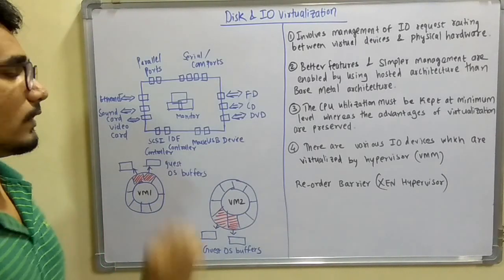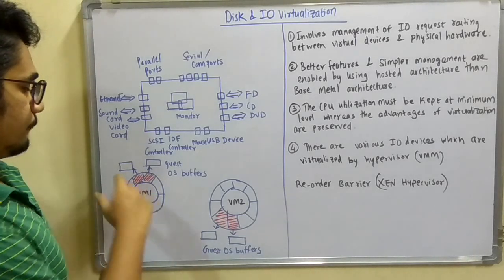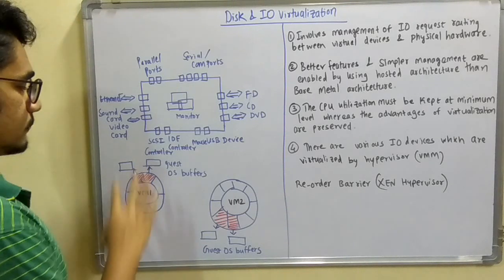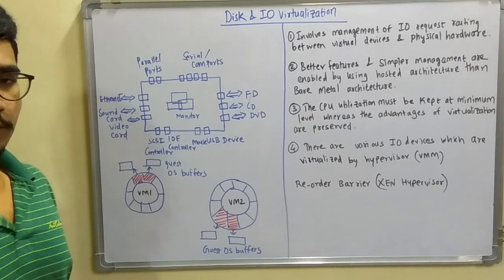When you use the Xen hypervisor, there comes a term called reorder barrier. Like I have said, if VM1 accesses one or two devices...